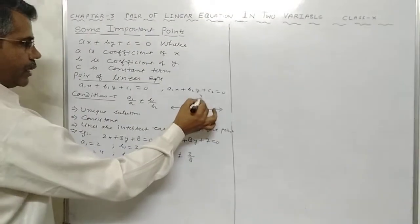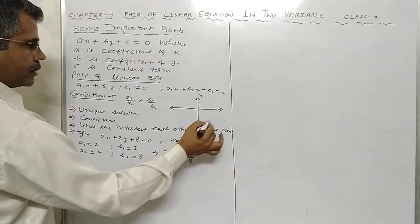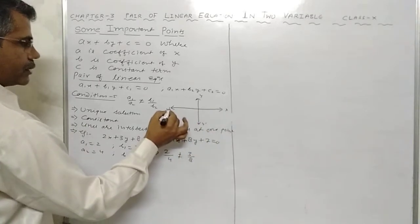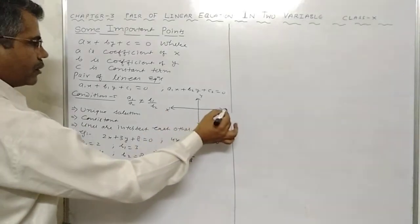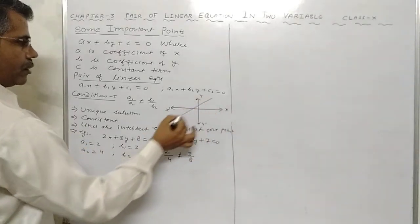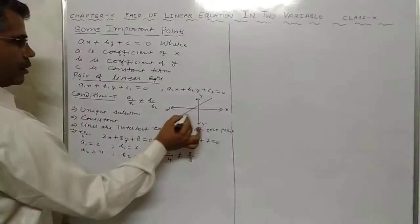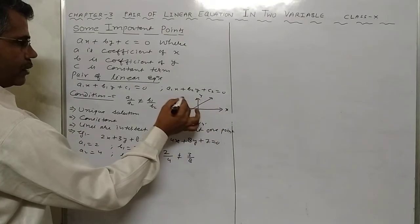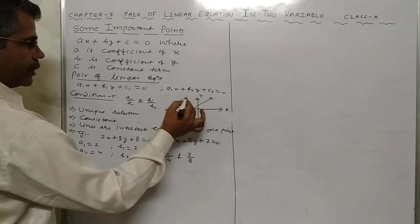The graph of this condition shows the lines intersecting at one point on the x-axis and y-axis.